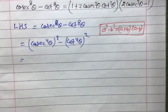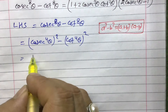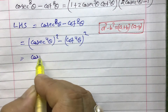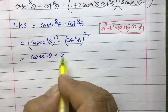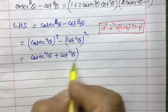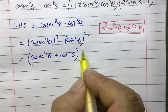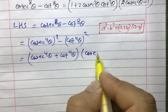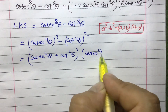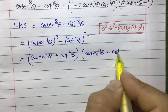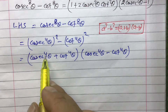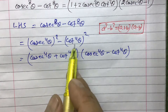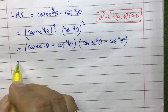Applying the a² - b² formula, we get: (cosec⁴θ + cot⁴θ)(cosec⁴θ - cot⁴θ). Now, each of these two factors can again be changed into squared form, so let us do that.